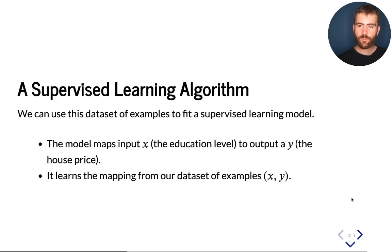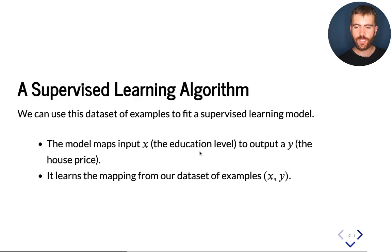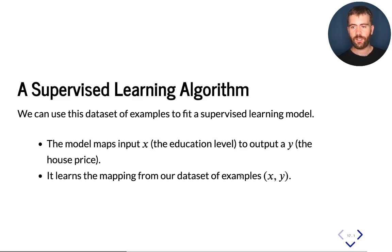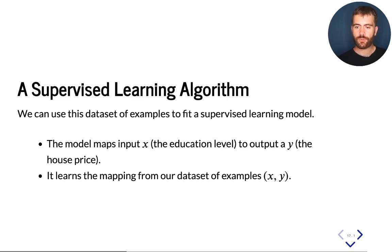A simple supervised learning algorithm maps some kind of inputs — in this case, education level — to certain outputs, which in this example are the house prices. We have a dataset of examples of x and y, where x is the education level and y is the house price. We can use this as training data for our supervised learning algorithm, which will be used to predict the prices of new houses.